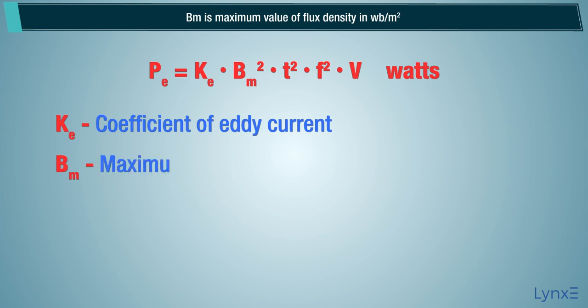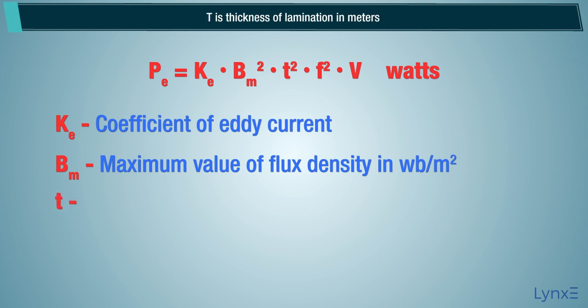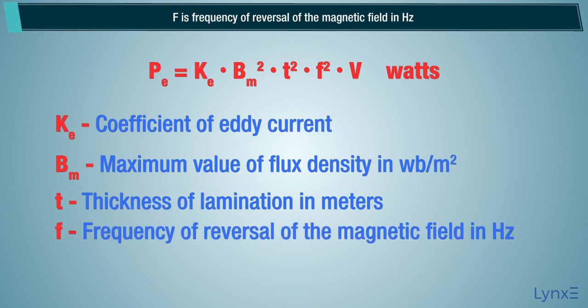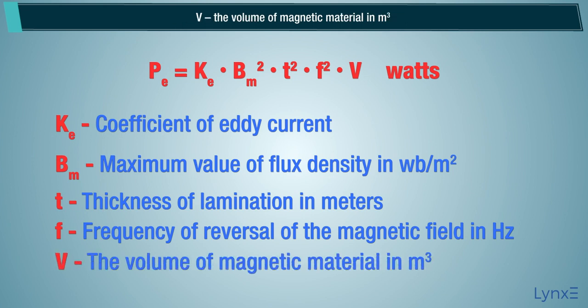BM is maximum value of flux density in WB per meter square. T is thickness of lamination in meters. F is frequency of reversal of the magnetic field in hertz. V is the volume of magnetic material in meter cube.